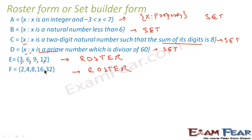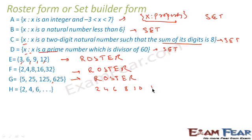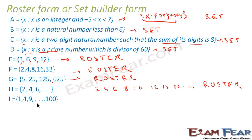When all the elements are listed, separated by comma, and enclosed within braces, it is roster form. When we say {x : property}, enclosed in braces, it is set builder form. Set G: {5, 25, 125} — all elements listed, separated by comma, enclosed in braces, so this is also roster form. Set H: {2, 4, 6, ...} — three dots indicate an infinite set, but since elements are listed with comma and braces, this is also roster form.